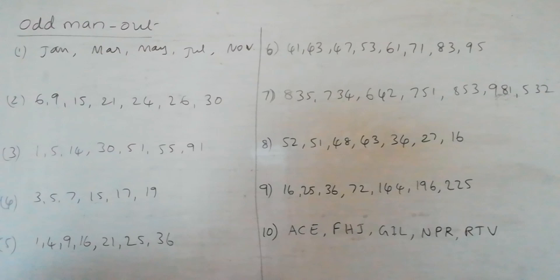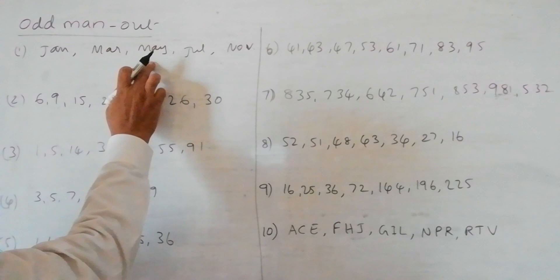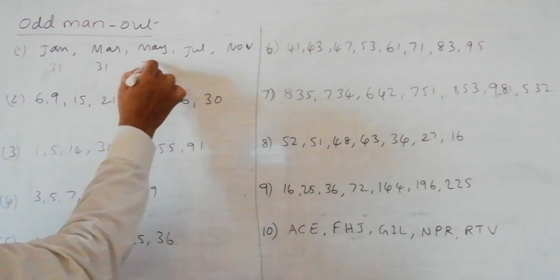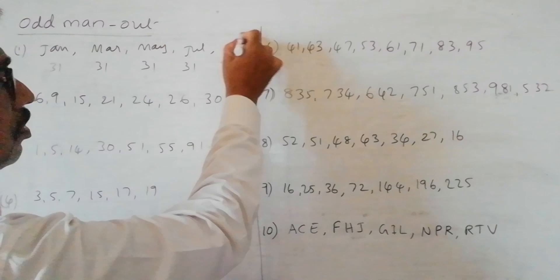Now coming to the first problem, this is very simple. Here we have the names of months January, March, May, July, November. If you observe the commonality, January, March, May and July have 31 days whereas November has only 30 days. So the odd man is November.